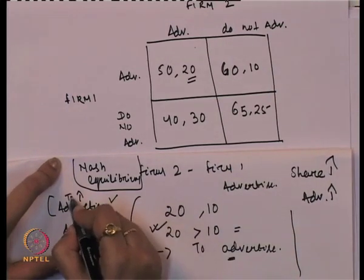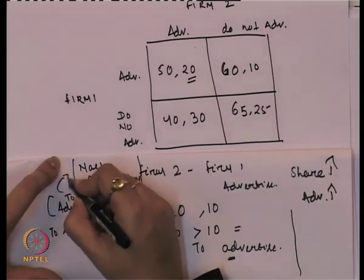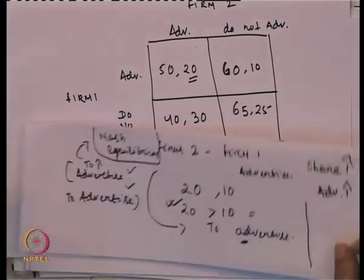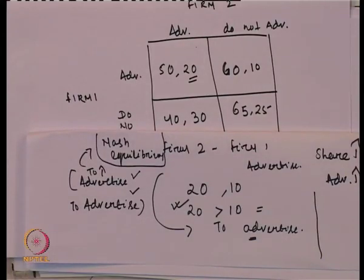That is why 'advertise and advertise' — this combination — leads to the Nash equilibrium. Taking this same example, we understand that when two companies are in competition making a decision, they look at what the opponent might choose, but ultimately they have to see that irrespective of whatever the other firm is doing, what is the best they are getting out of it.